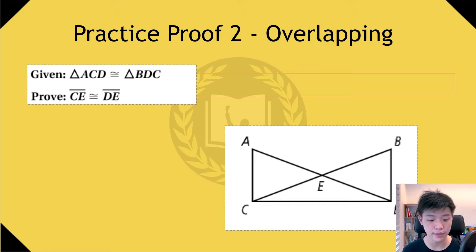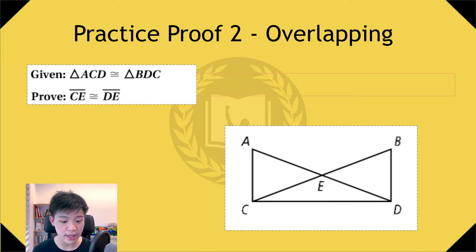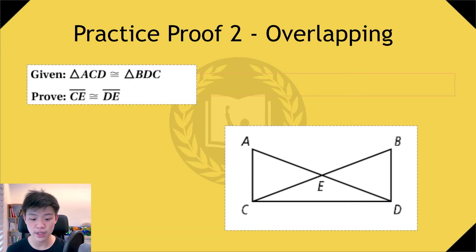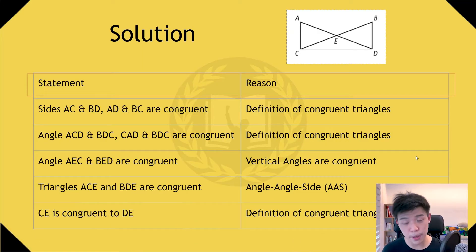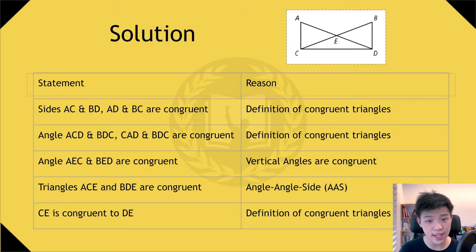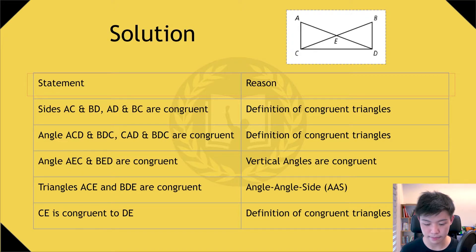Now let's do another harder practice proof. Feel free to pause the video and work it out yourself. You are given that angle ACD is congruent to angle BDC. Prove that line CE is congruent to line DE. This is a bit more confusing, but again, we need to find statements and reasons to establish congruency. First, we know that sides AC and BD are congruent, and AD and BC are congruent, because it is given that triangles ACD and BDC are congruent, meaning their sides must have the same length.